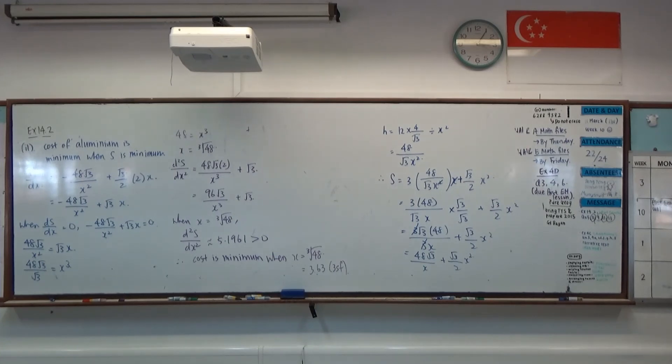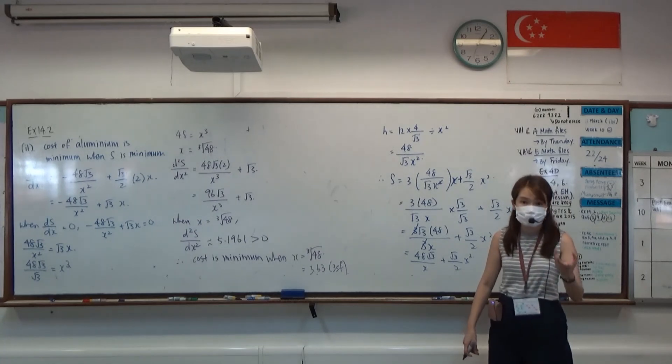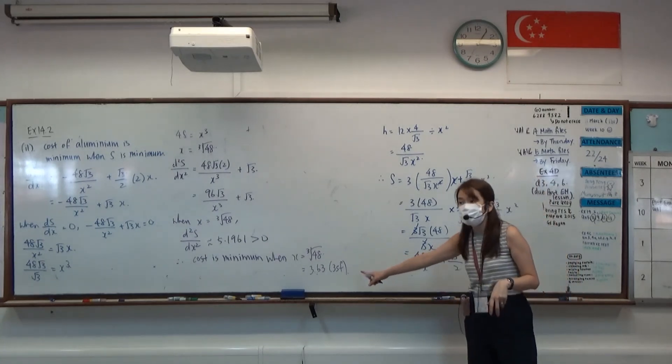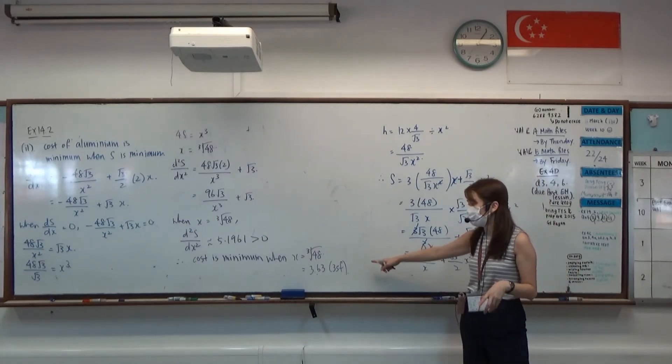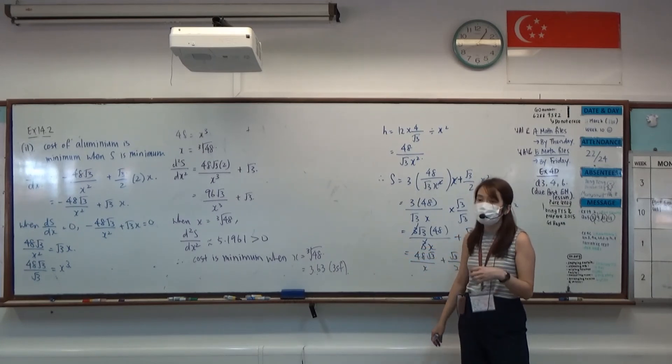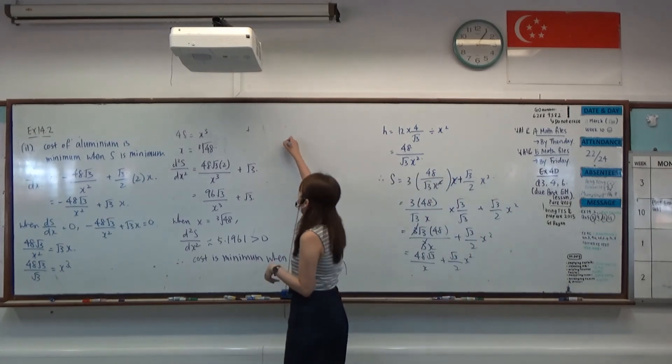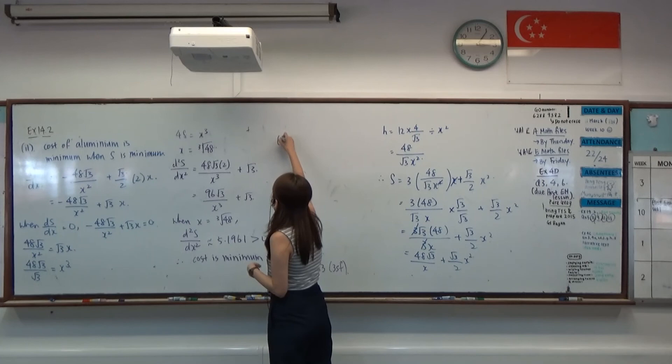Then in part 3, they ask to explain what will happen to the cost of aluminum used if the value of X were arbitrarily chosen instead of taking the value obtained in part 2. So arbitrarily chosen means that you take any number other than this value. So if you take any number of X that is other than this value, that will mean that the cost will no longer be minimum. So the cost will definitely be higher than this value.